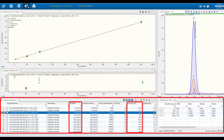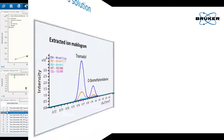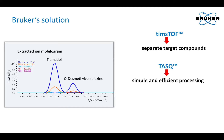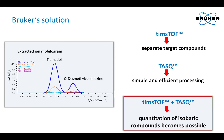Quantities and information such as accuracy and relative standard deviation can be viewed in a results table. In summary, we have demonstrated that ion mobility via Bruker's TIMSTOF can separate target compounds that are not separated by LC and MS alone. Bruker's software tasks enable simple and efficient processing of TIMSTOF data. With Bruker, quantitation of isobaric compounds becomes possible.